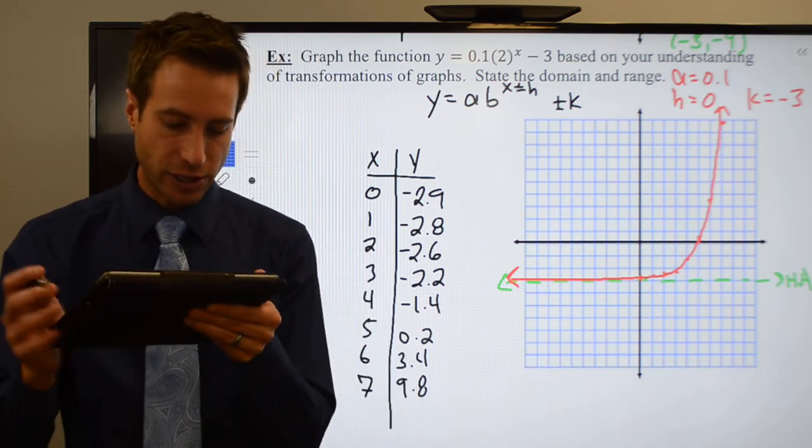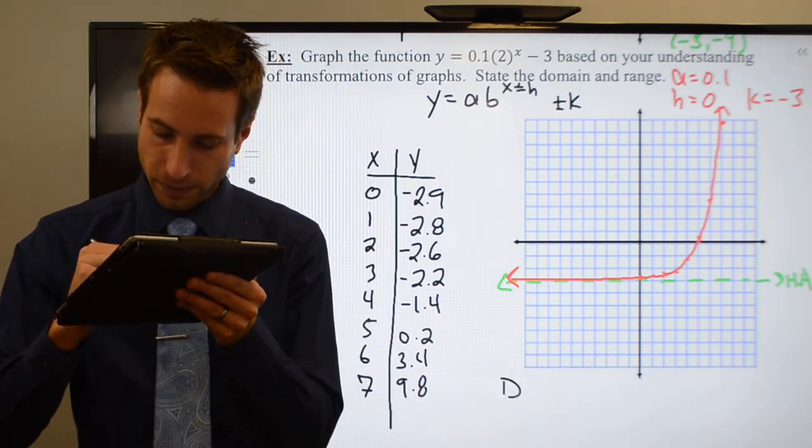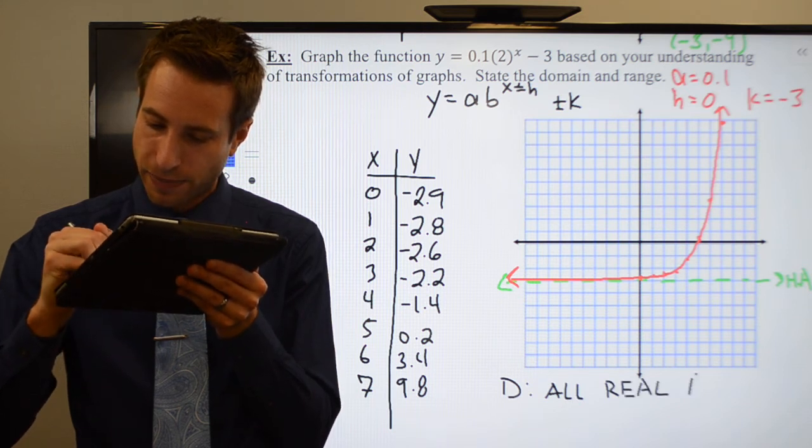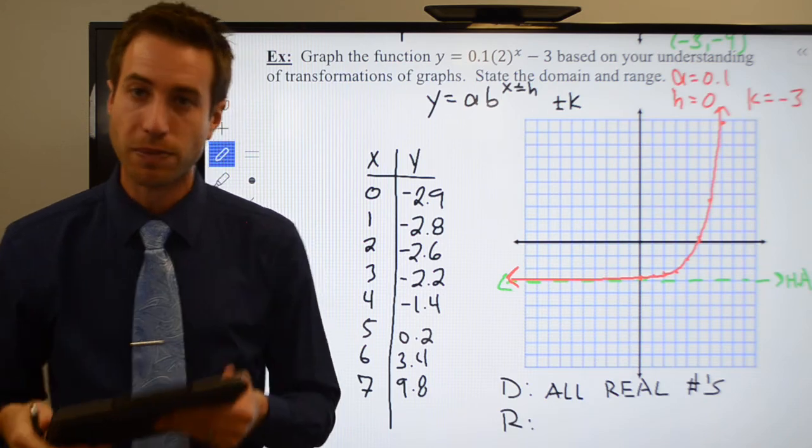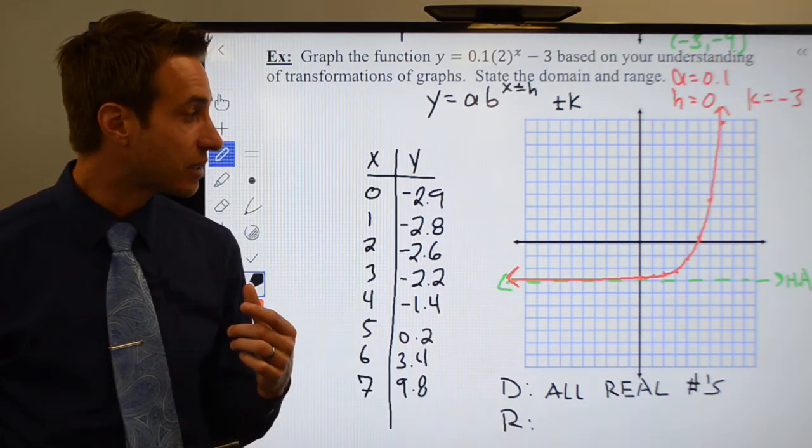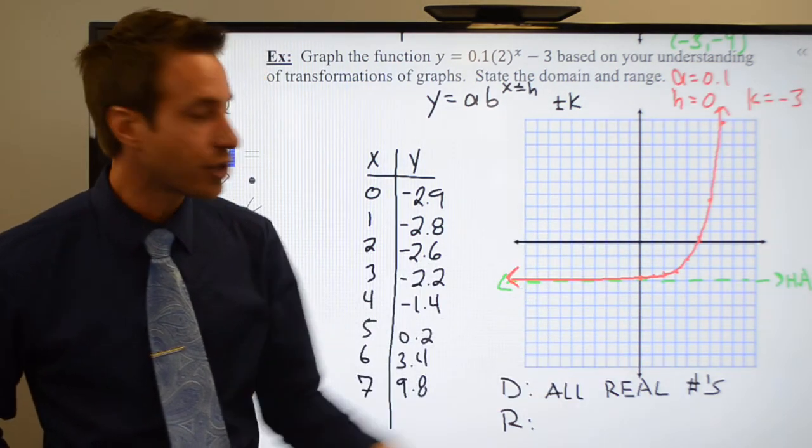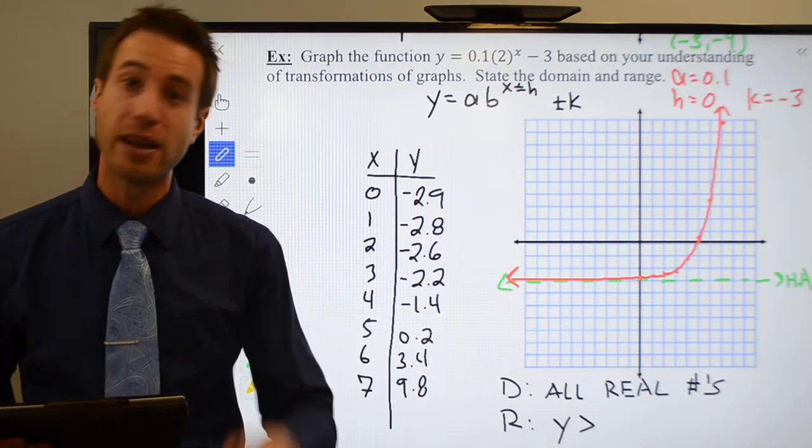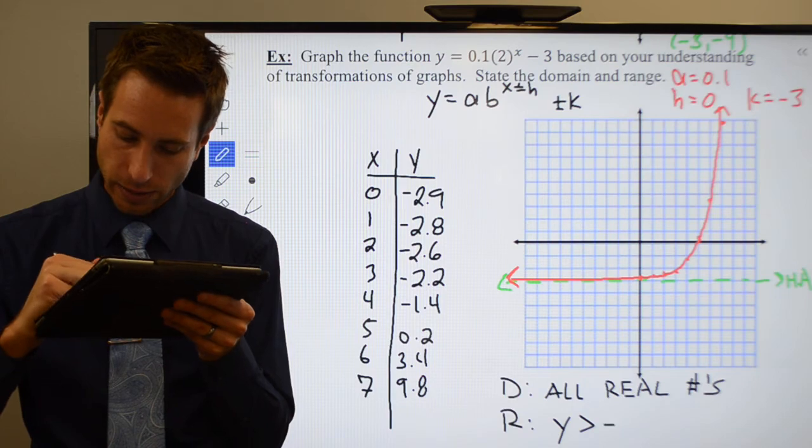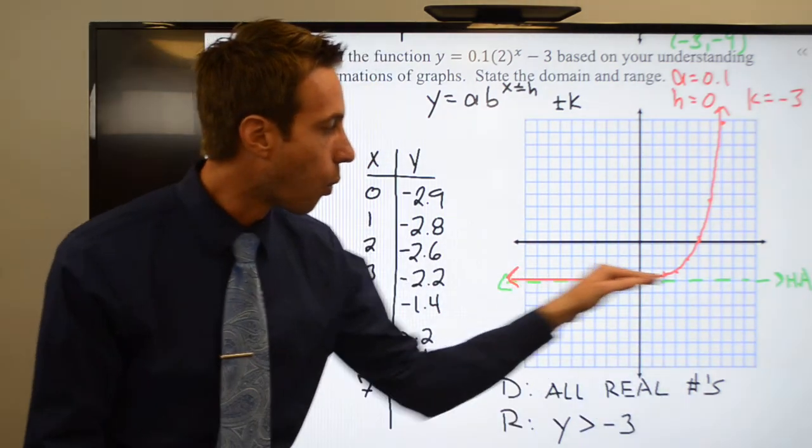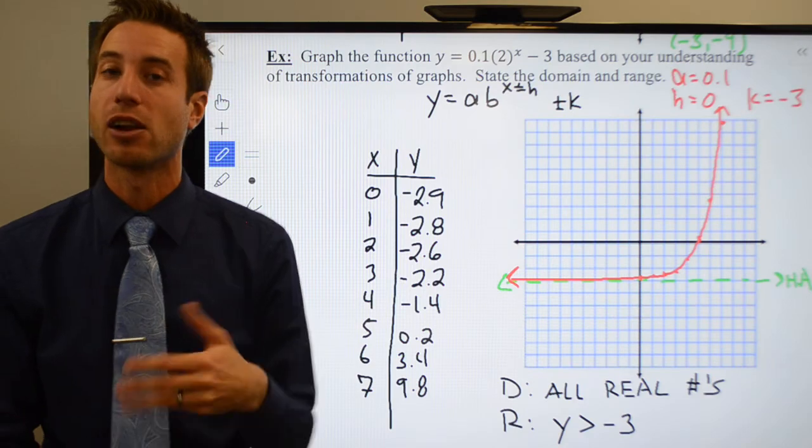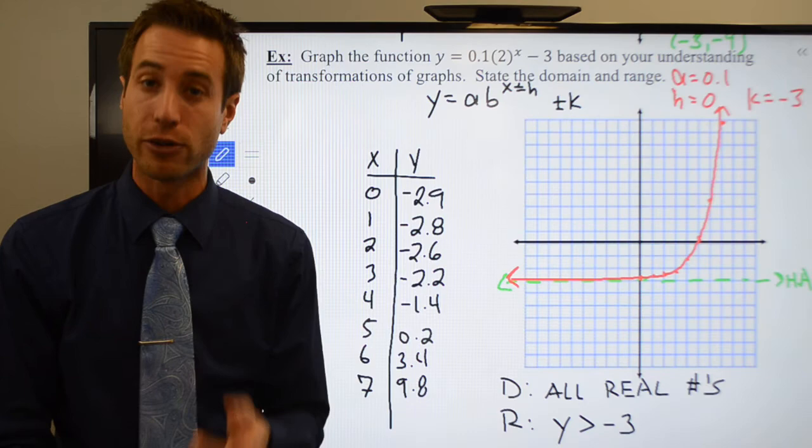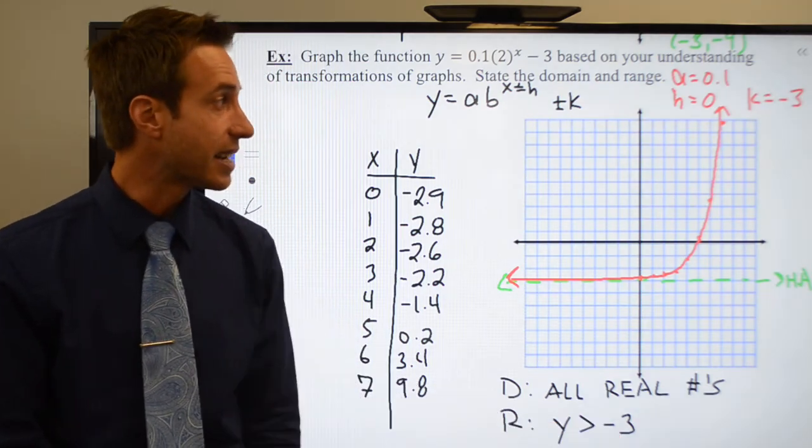Let's get the domain and range to finish this one off. All real numbers. It'll be all real numbers every time. You can plug in any value of x that you want to. But now the range is going to be a little different. My horizontal asymptote has been shifted down three units. So I'm going to want all values of y that are greater than a minus three. Since my horizontal asymptote is at y equals negative three, that's the line that I'll approach but never touch. So all my range values are going to be greater than, strictly greater than negative three.